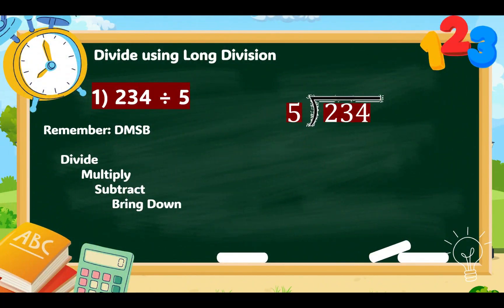Now, let's use long division. Number 1, 234 divided by 5. Once again, let's remember DMSB, Dad, Mom, Sis, Bro, or Divide, Multiply, Subtract, Bring Down. This is a repeated process.